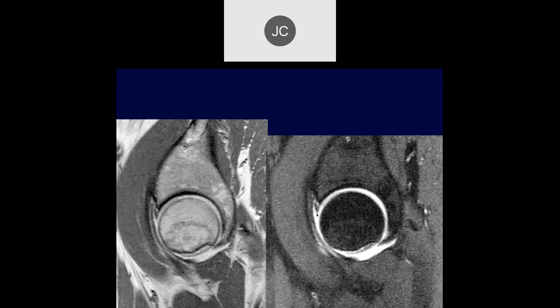Robert, looking at the hip, the anterior labrum looks like there's some irregularity and tearing at the base of the anterior labrum — right in through there. This was a confirmed labral tear. Chondrolabral junction congenital defects or sulci rarely occur in the anterior labrum, so if you see fluid extending deep to the anterior labrum and the bone, it's most likely going to represent a tear.